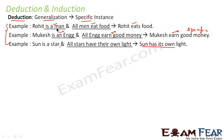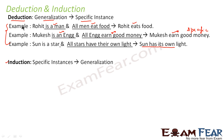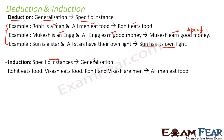Now let's understand induction. Induction is just the reverse of deduction. In induction, we have specific instances and from those we get a generalization. For example, Rohit eats food, Vikas eats food, and Rohit and Vikas are men — from these specific instances we can generalize that all men eat food.